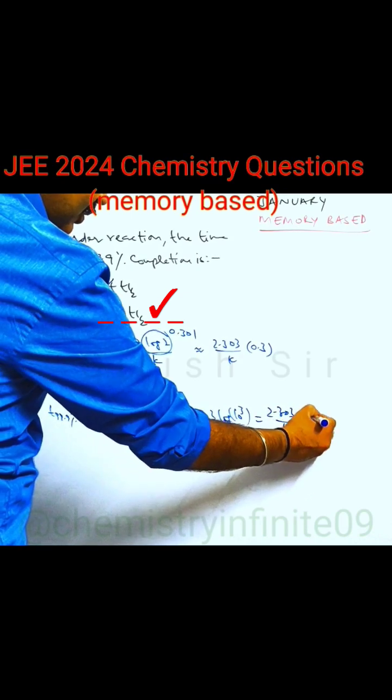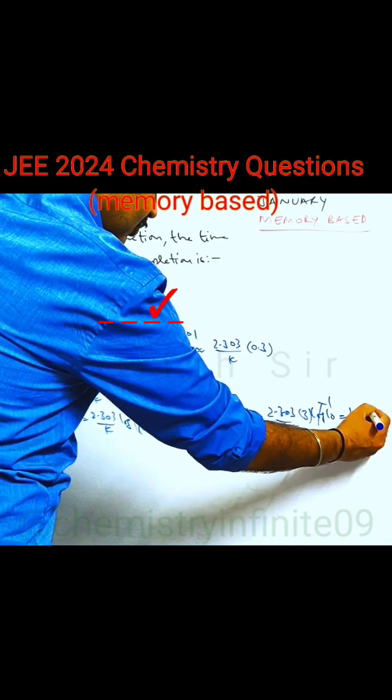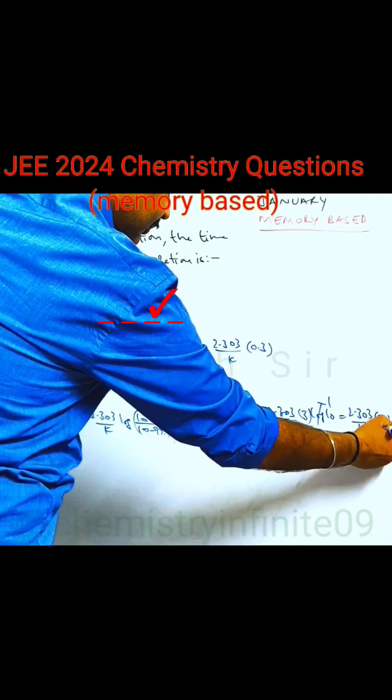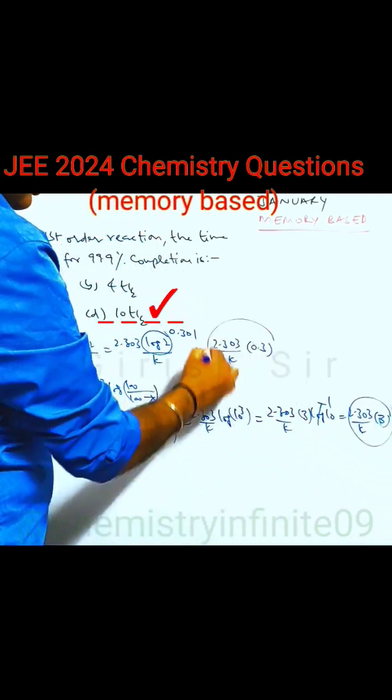as 3 log 10. Log 10 is 1. So, we are getting 2.303 by k into 3. Now, look at this expression. This is 10 times.